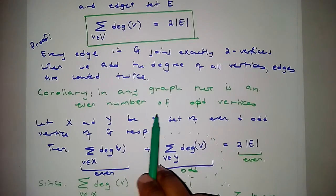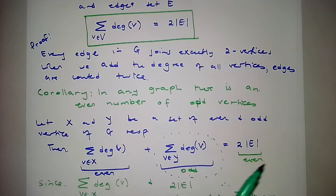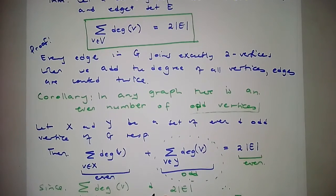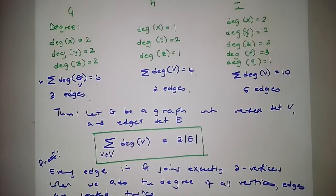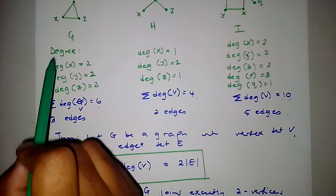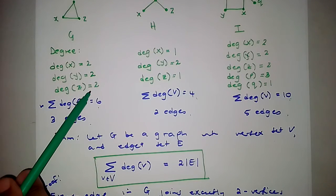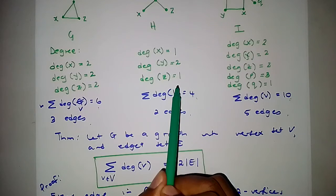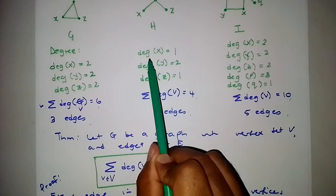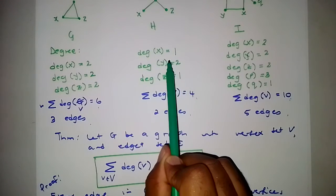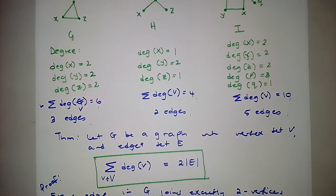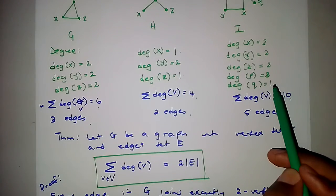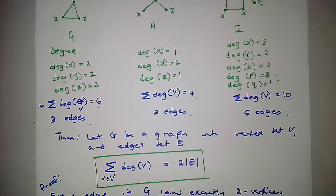Remember that an odd vertex means a vertex whose degree is odd. Looking at our three graphs: in Graph G there are no odd-degree vertices. In Graph H, we have 2 odd-degree vertices — an even count. In Graph I, the odd vertices are also an even number. This confirms our corollary that in any graph there is an even number of odd vertices.